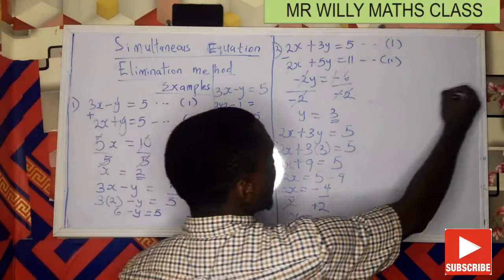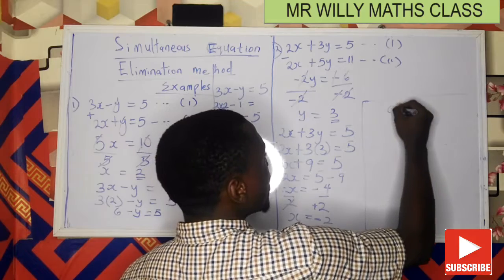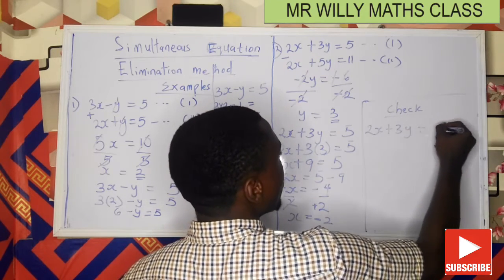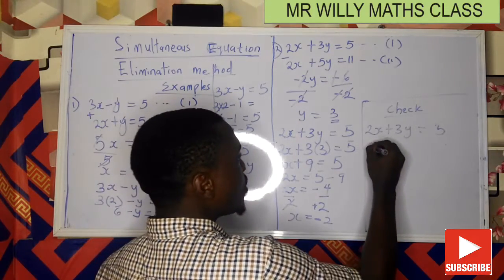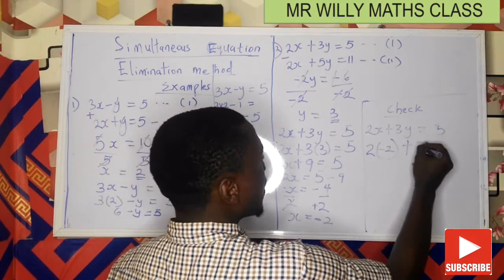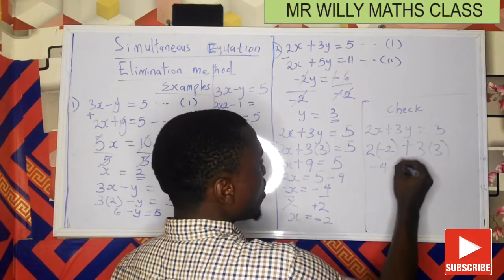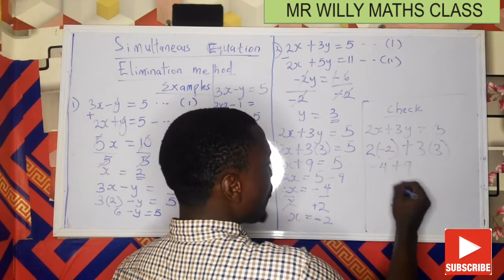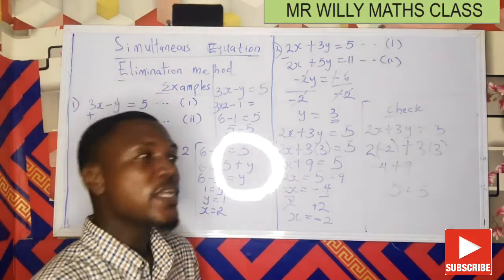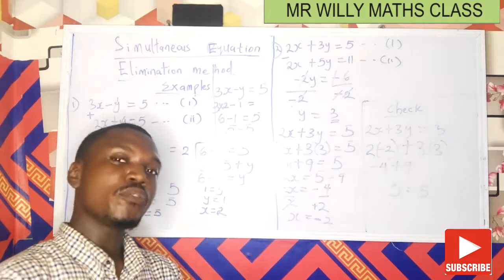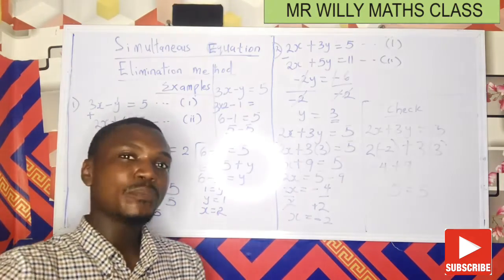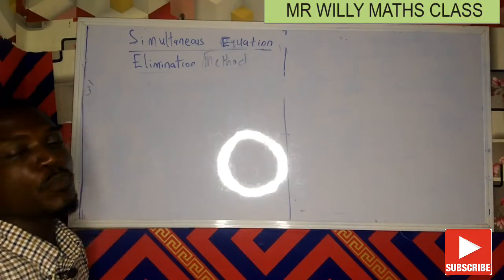Let's check by substituting x equals minus 2 and y equals 3 into equation one: 2 times minus 2 plus 3 times 3 equals minus 4 plus 9 equals 5. So 5 equals 5 — we are correct. To summarize the elimination method: get rid of one variable, solve for the remaining variable, then use that value to solve for the eliminated variable.